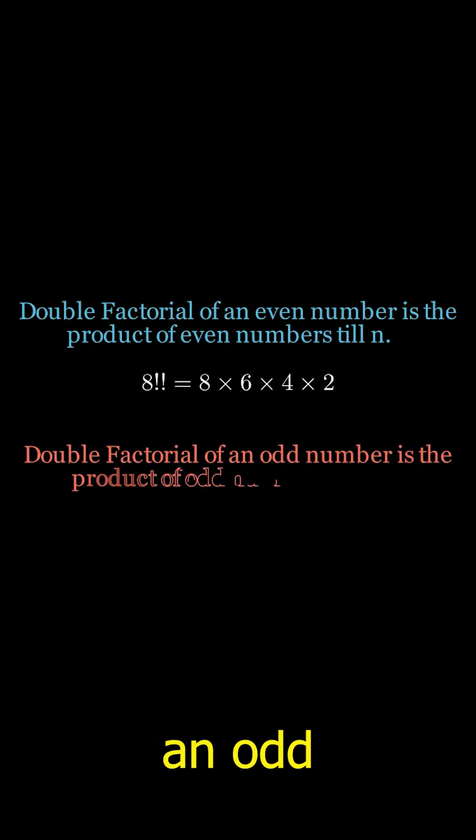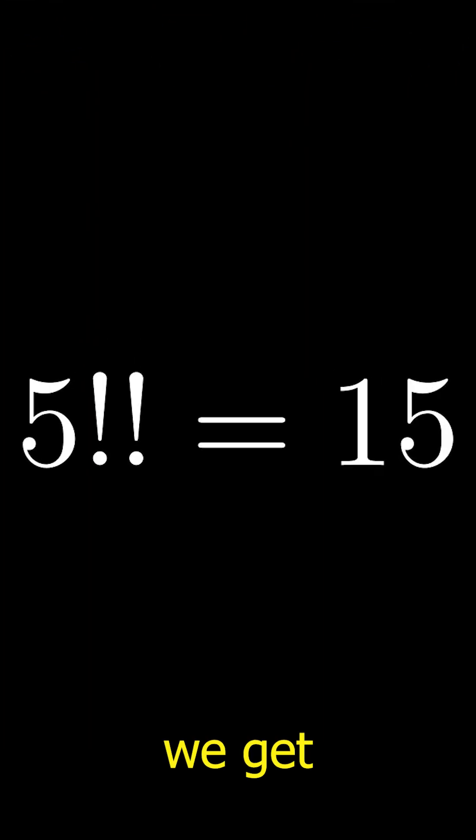A double factorial for an odd number is the product of all odd numbers till n. Therefore, 5!! is 5 × 3 × 1, which equals 15.